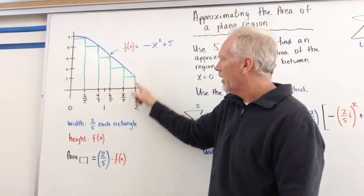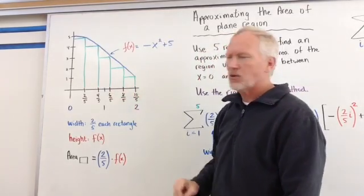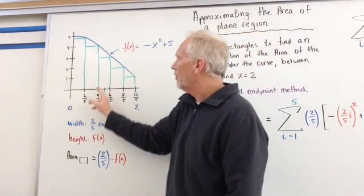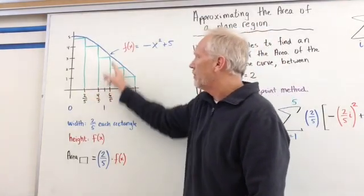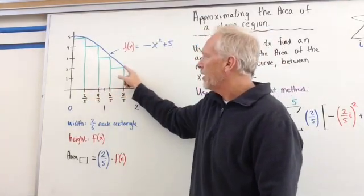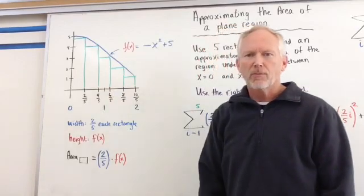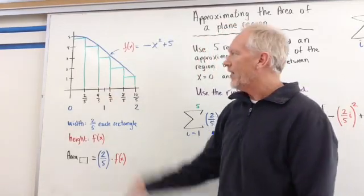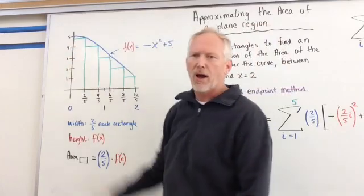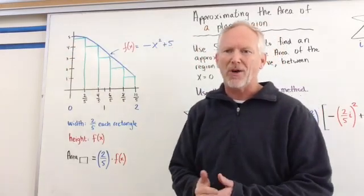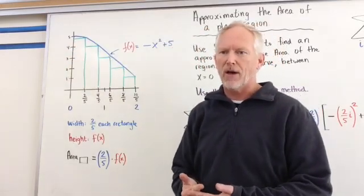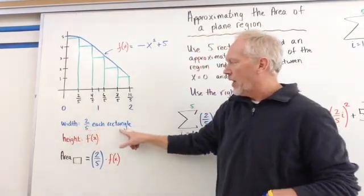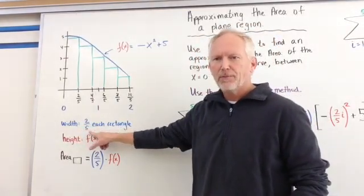What we do is draw from 2/5 up to the curve and then across. We go to 4/5 and draw up to the curve and over to the rectangle next to it, then 6/5, and so on until we get to 10/5. We draw up to the curve and make a horizontal line across. The values may or may not match the y values exactly, but we can find out what those y values are. The width of each rectangle will be 2/5.